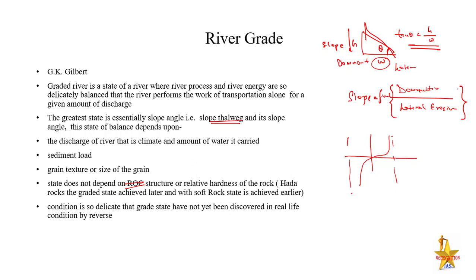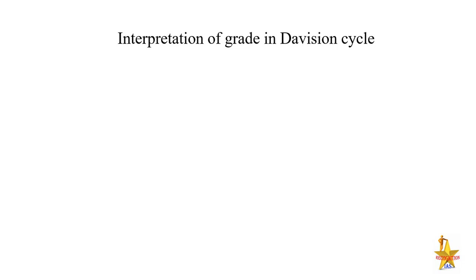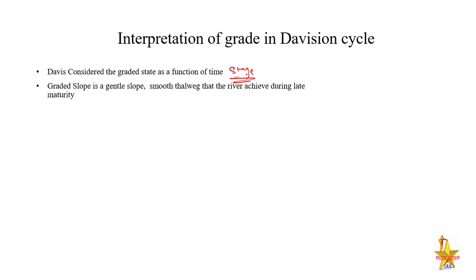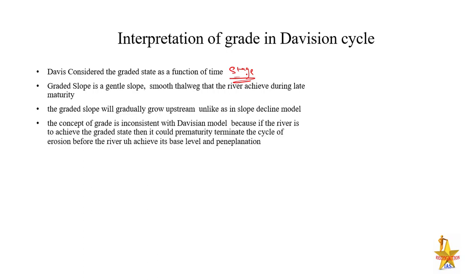River grade requires permanency to develop. In the Davisian cycle, the graded state is interpreted through youth stage, mature stage, and senile stage. Davis considered the grading system as a time function — related to stage. Based on stage, he described gentle slope and smooth thalweg up to the maturity and senile phase. The graded slope will gradually grow upstream, unlike the slope decline model where upliftment and erosion were considered simultaneously, which is why that principle doesn't fully apply here.